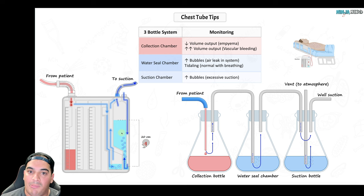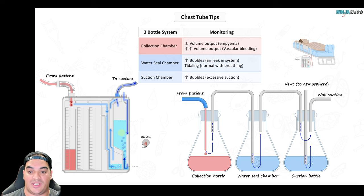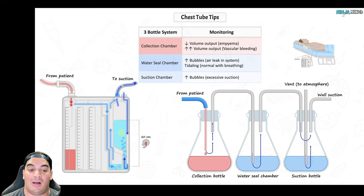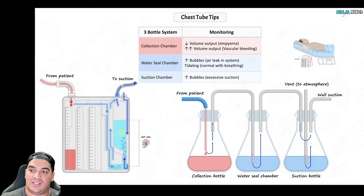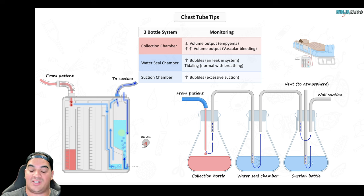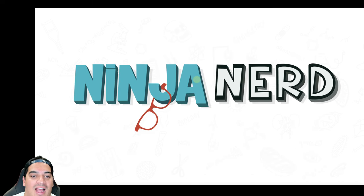In the suction control chamber, a little bubbling is normal and confirms appropriate suction. Excessive bubbling means suction is too high — if the pneumothorax has resolved and the pleural space is obliterated, excessive suction will suck on lung tissue and cause injury. I hope that made sense — until next time.